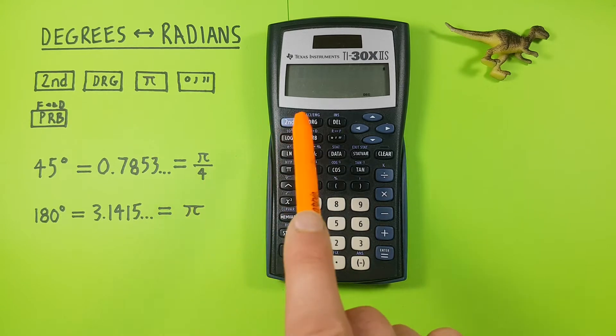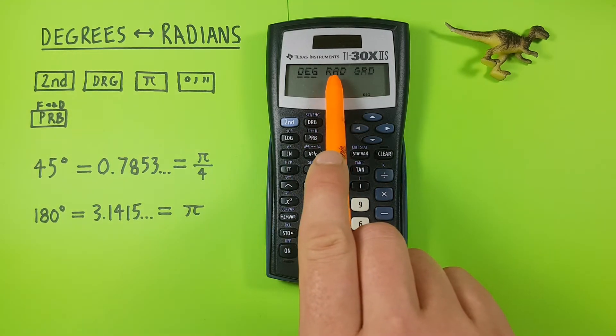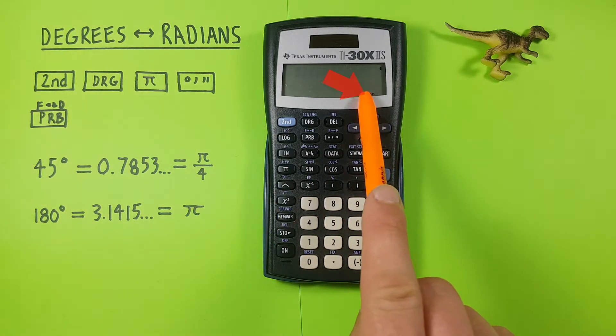To do this we press the DRG key which will bring us to this menu here. We want rad so we can scroll over and press the enter key. You should now see an RAD at the bottom of your screen here letting you know you're in radian mode.